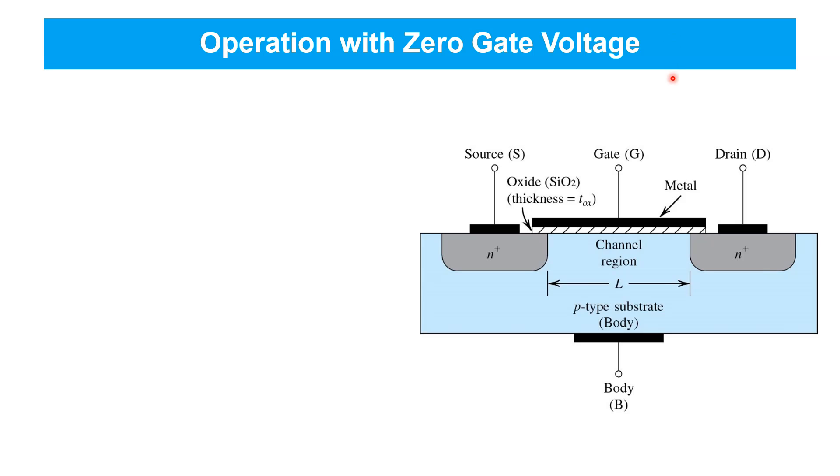The region under the gate between the source and drain is called the channel region. Under the right conditions, a conducting channel forms here, allowing current to flow between drain and source.